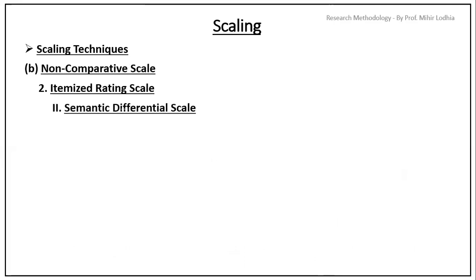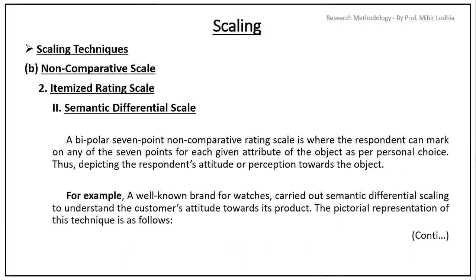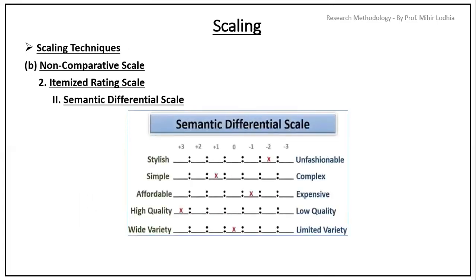Second one is semantic differential scale. This is a bipolar 7 point non-comparative rating scale where the respondent can mark on any of the 7 points for each given attributes of the object as per personal choice. Thus, depicting the respondent's attitude or perception towards the objectives. Let's take the example. A well-known brand for watches carried out semantic differential scaling to understand the customer's attitude towards its product. The pictorial representation of this technique is as follows. You can see the pictorial image.